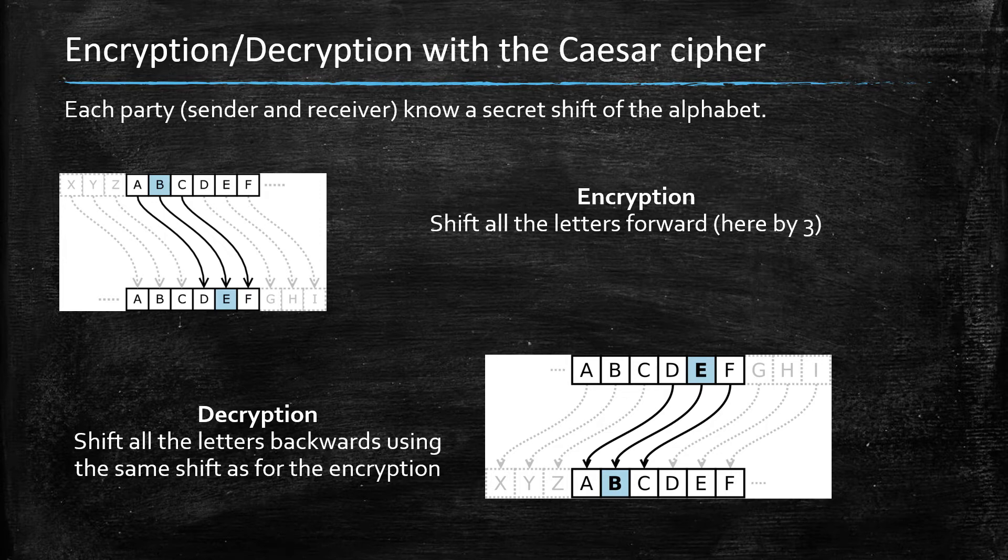The way it works is that each party knows a secret shift of the alphabet. For example, in this case, let's say the two people communicating share the secret three, which means that in each message to encrypt, every letter has to be mapped to the letter that is three steps further down in the alphabet.